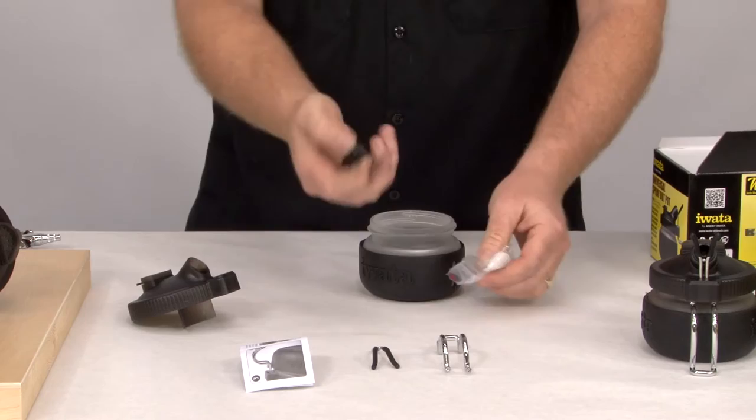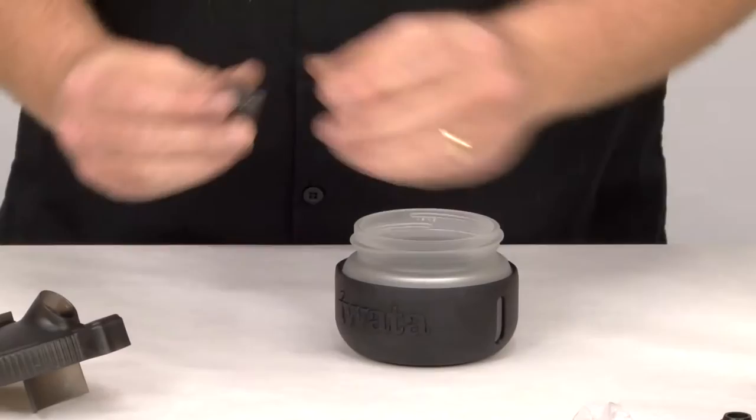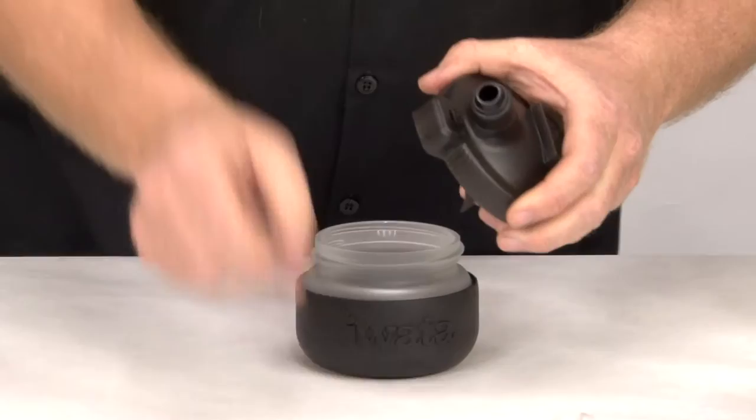The nozzle holder is kind of cool. It comes with a spare, just in case you break it or lose it. Fits inside this collar nicely, and you just press-fit it right inside there. Snaps right in.